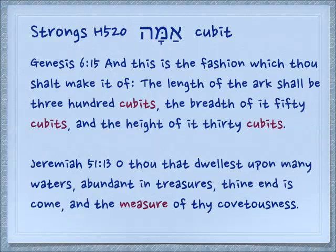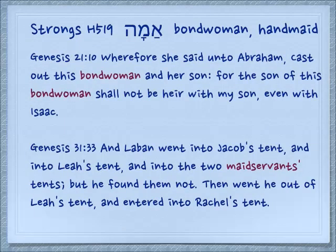Genesis 6:15: 'And this is the fashion which thou shalt make it of. The length of the ark shall be 300 cubits, the breadth of it 50 cubits, and the height of it 30 cubits.' And again, as a concept of being a measurement, Jeremiah 51:13: 'O thou that dwellest upon many waters, abundant in treasures, thine end is come, and the measure of thy covetousness.' Amma also means a bondwoman or a handmaid — again we have this concept of the person who's holding the people group together. Genesis 21:10: 'Wherefore she said unto Abraham, cast out this bondwoman and her son, for the son of this bondwoman shall not be heir with my son, even with Isaac.'